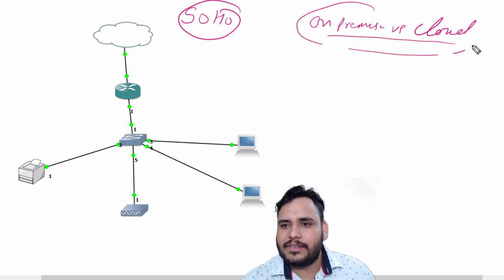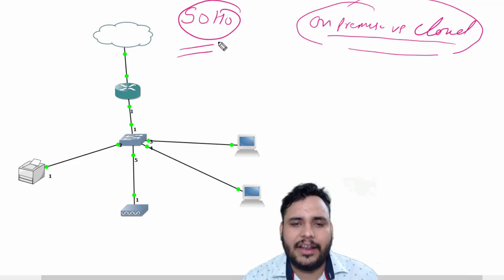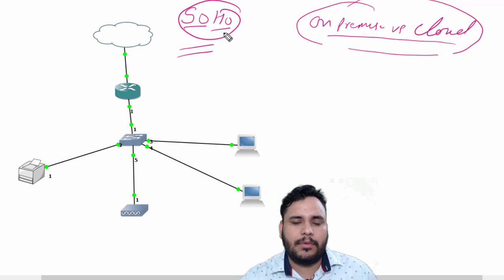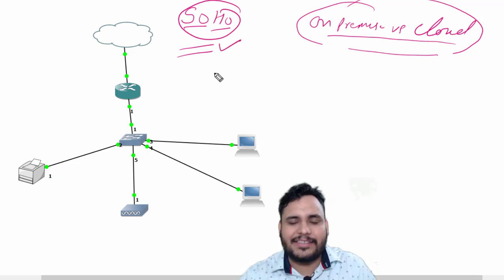But first of all, we need to discuss about SOHO architecture. Actually, small office home office design is basically used to reduce the devices in our topology. Like we know that we are going to connect with internet service provider with our routers.